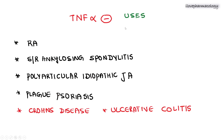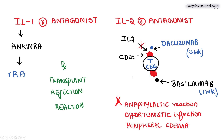TNF-alpha inhibitors can be used in refractory or resistant cases of rheumatoid arthritis, severe or resistant ankylosing spondylitis, polyarticular idiopathic juvenile arthritis, plaque psoriasis, Crohn's disease, and ulcerative colitis — that is, inflammatory bowel diseases.